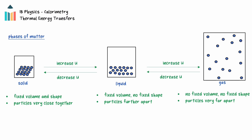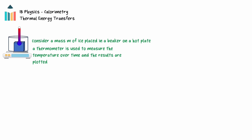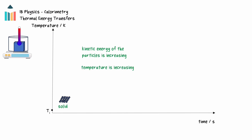When heat is added or removed from a substance, it will increase or decrease the internal energy. A mass M of ice is placed in a beaker on a hot plate, and energy is transferred into the ice. A thermometer is placed such that the temperature can be measured over time, and a graph of temperature as a function of time is created. The ice has an initial temperature Ti and is a solid. Its particles are close together, with little freedom of movement. As energy is transferred from the hot plate, the kinetic energy of the particles increases, increasing the temperature of the ice. Because temperature and kinetic energy are directly proportional, this temperature increase is linear. The temperature will continue to increase linearly until the melting point is reached.